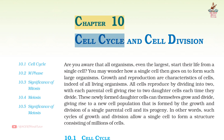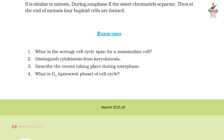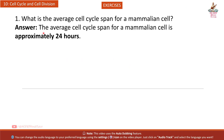Chapter 10: Cell Cycle and Cell Division — Short Question Answers from Class 11 Biology Exercises. Question 1: What is the average cell cycle span for a mammalian cell? The average cell cycle span for a mammalian cell is approximately 24 hours.